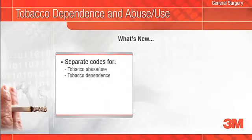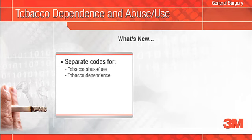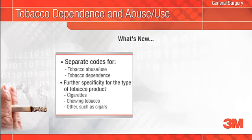ICD-9 provided a single code for tobacco abuse and dependence without differentiation and without further specificity for the type of tobacco product. ICD-10 provides separate codes for these. If your intended diagnosis is dependence, dependence is what you should document rather than abuse. According to the Centers for Disease Control and Prevention, most smokers are dependent and nicotine dependence is the most common form of dependence in the U.S. Additionally, further specificity is provided in ICD-10 for the type of tobacco product dependence, as cigarettes, chewing tobacco, or other — for example, cigars. This should be documented as well.